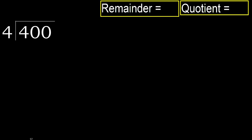400 divided by 4. 4 is not less, therefore with 4. 4 multiplied by which number is nearest to 4, but not greater?